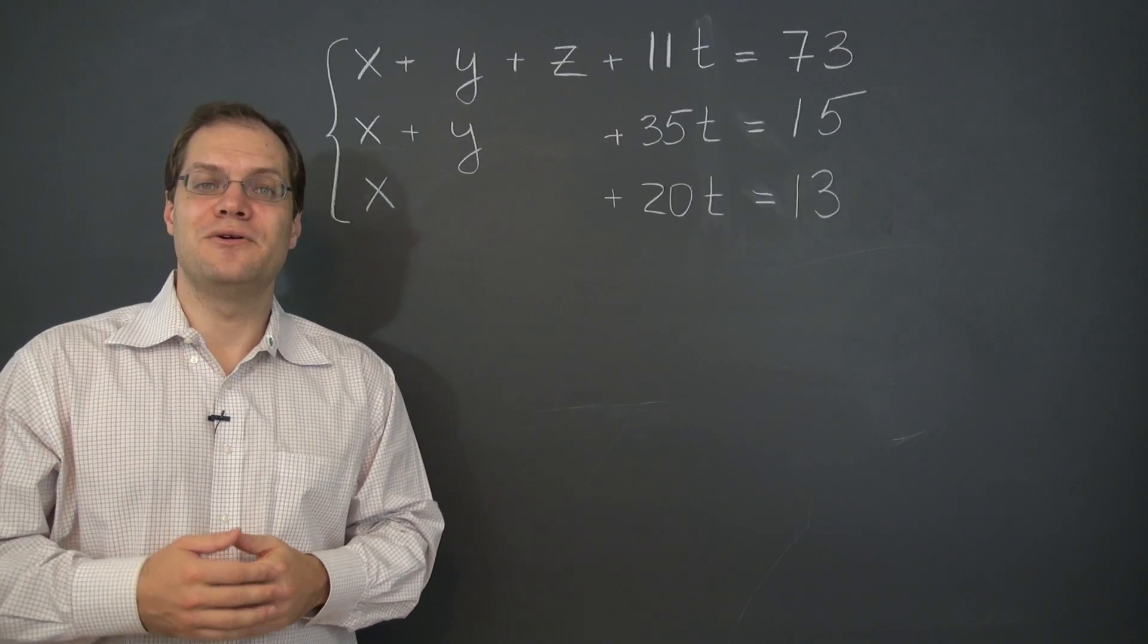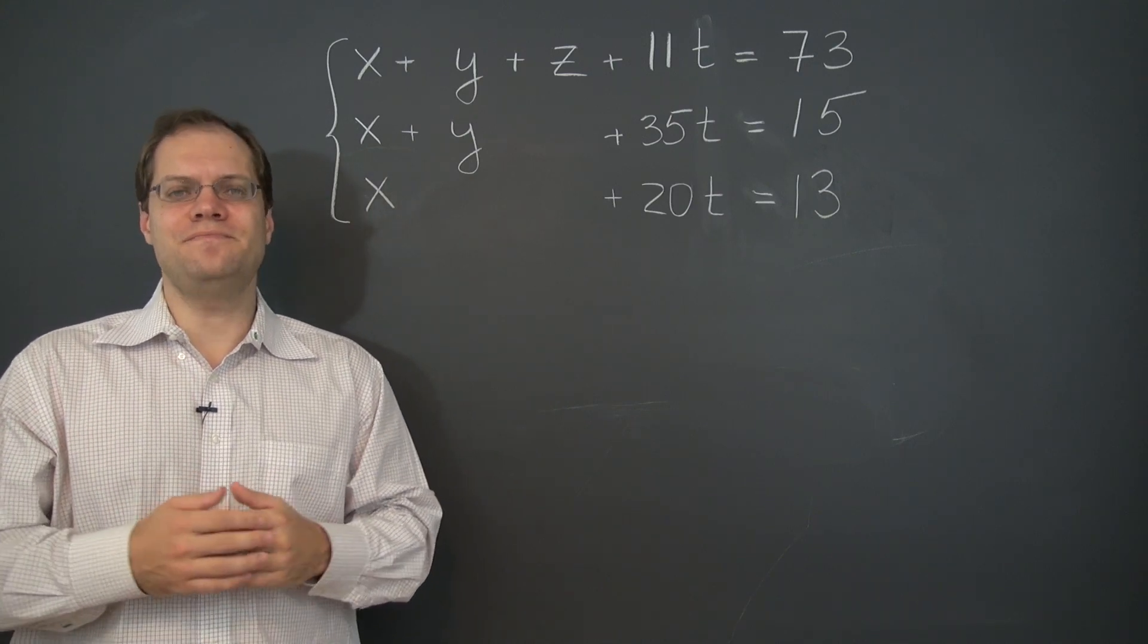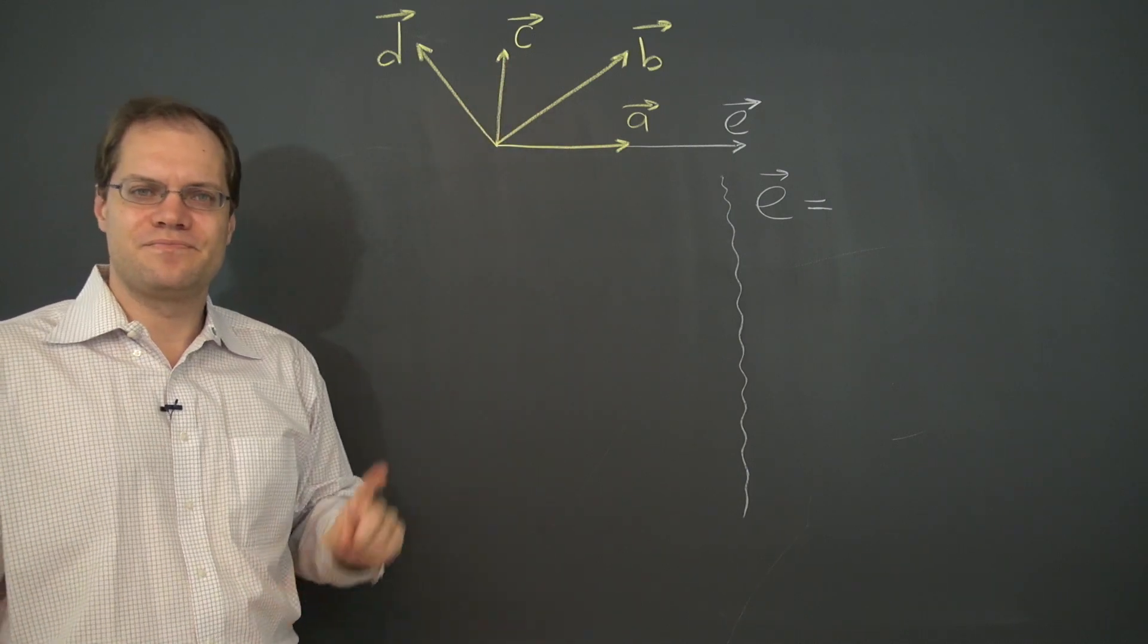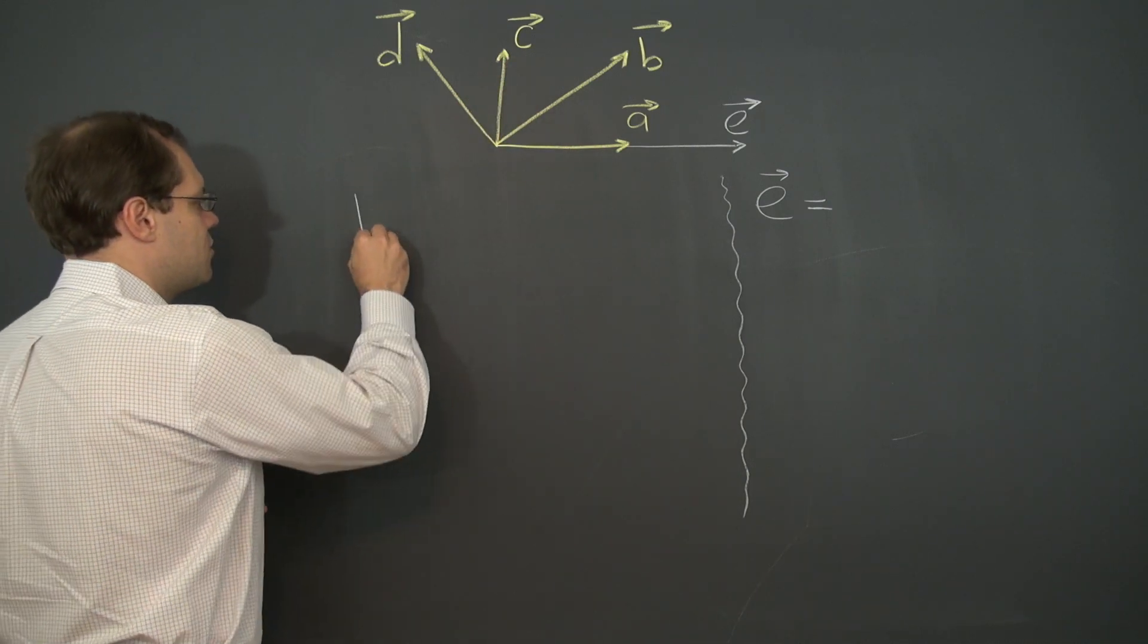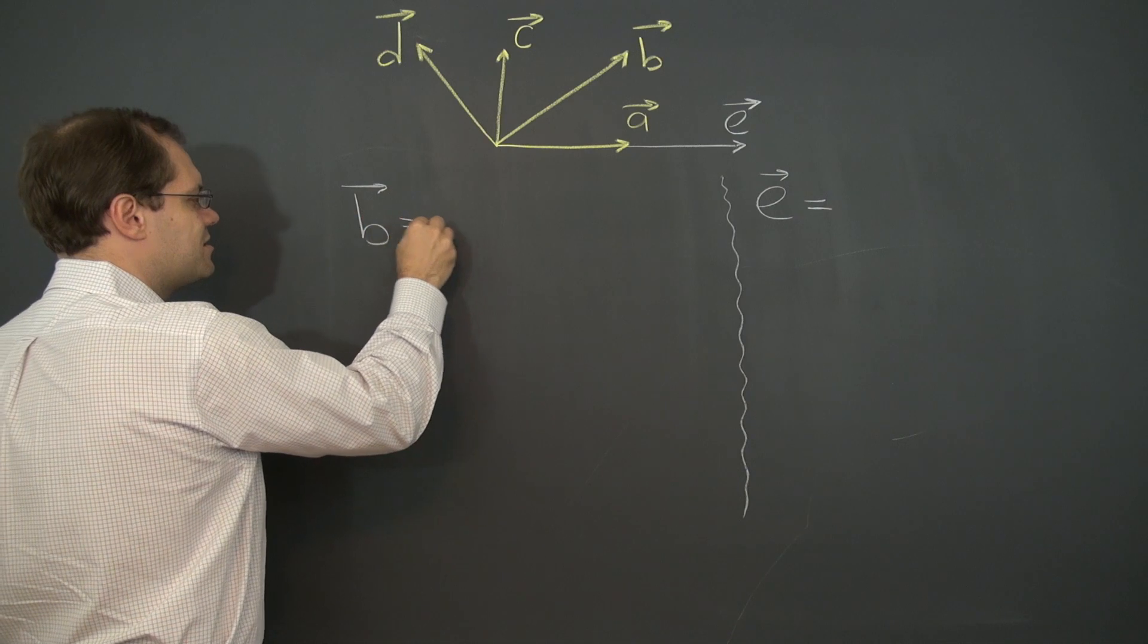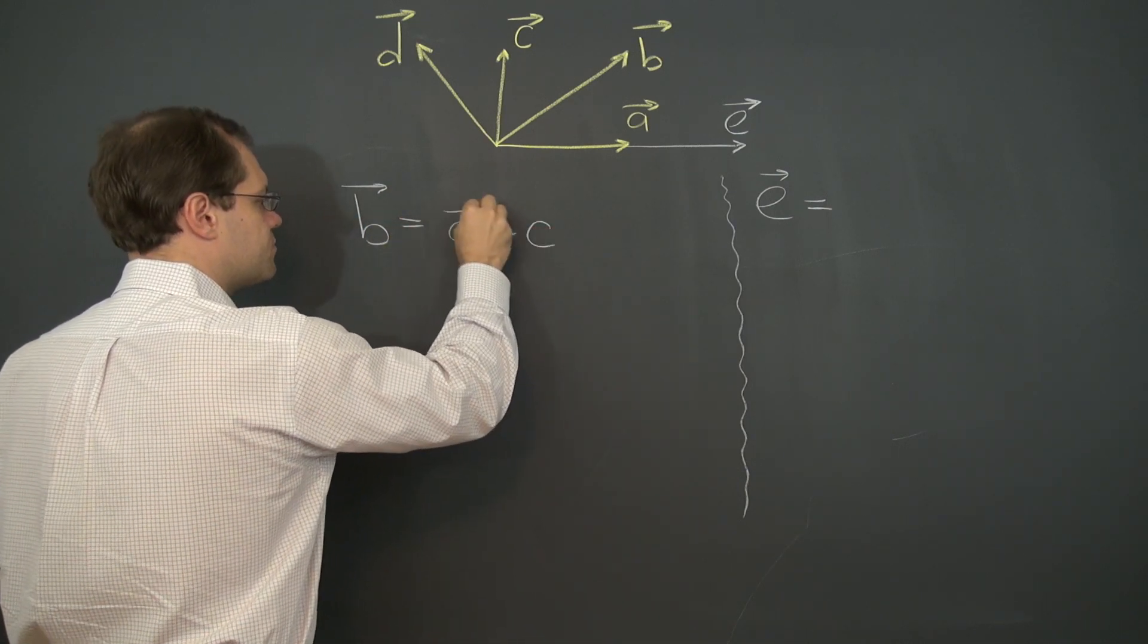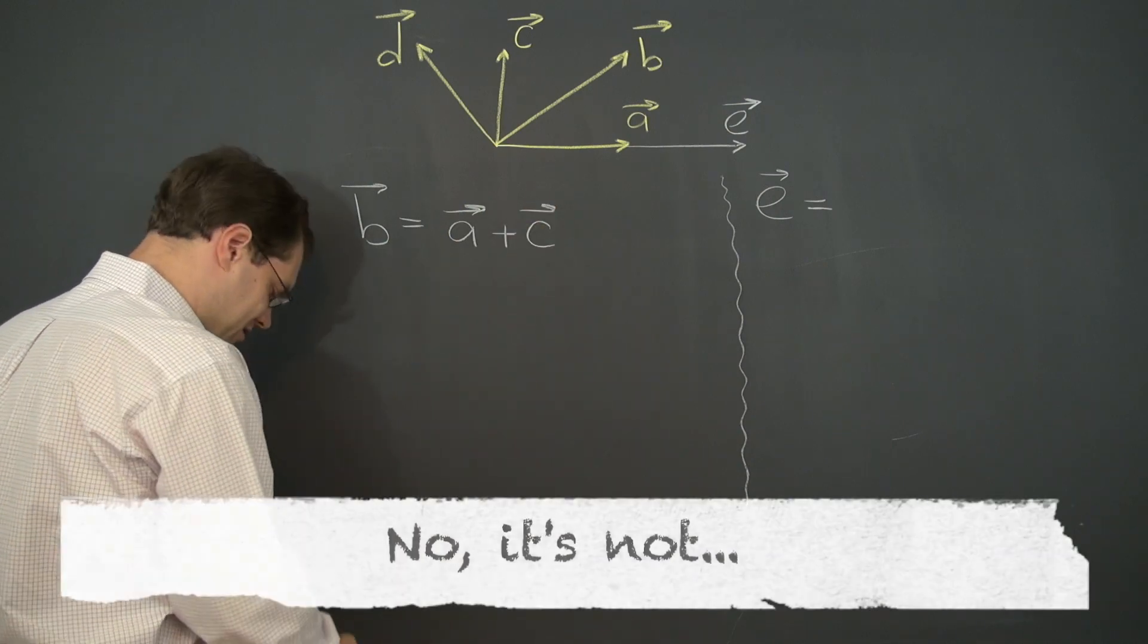Now some of you may be saying to yourselves, well, I think you might first notice that B is a sum of A and C. That's correct. Let's write that down. B is a sum of A and C. Is that what I said?